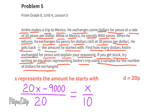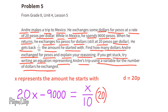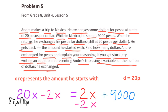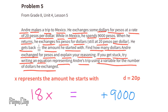Multiplying both sides by 20 to undo the division, the left side becomes 20x minus 9,000. The right side becomes 20x divided by 10, which equals 2x. Adding 9,000 to both sides and subtracting 2x from both sides gives the equation 18x equals 9,000.